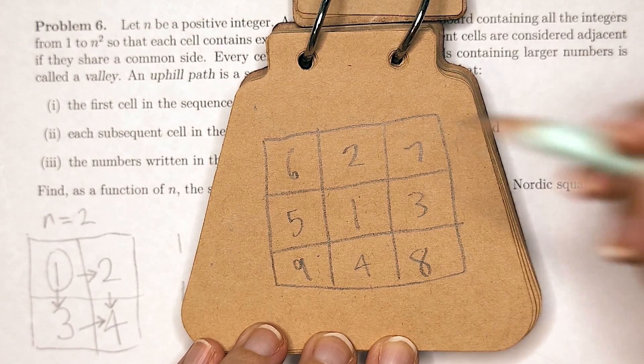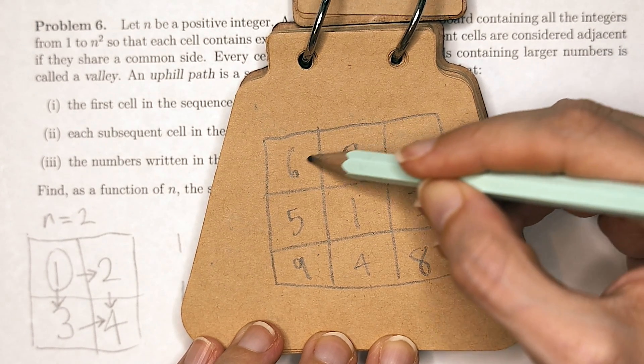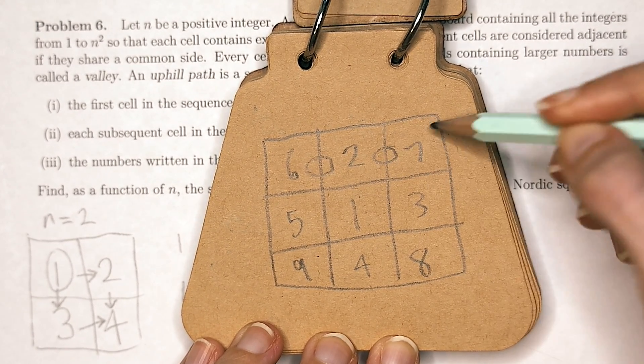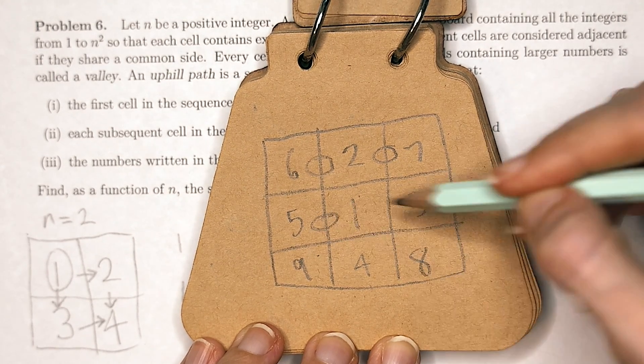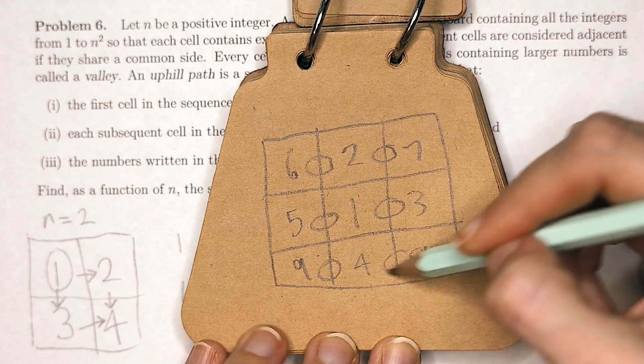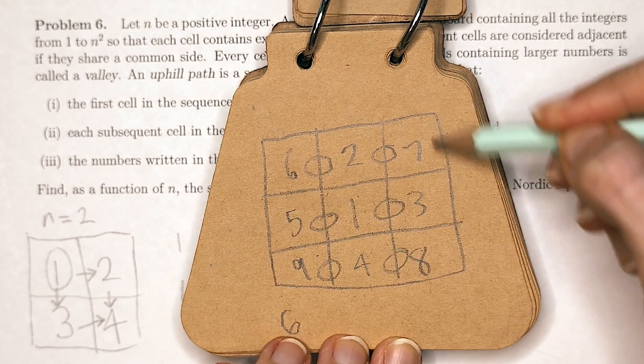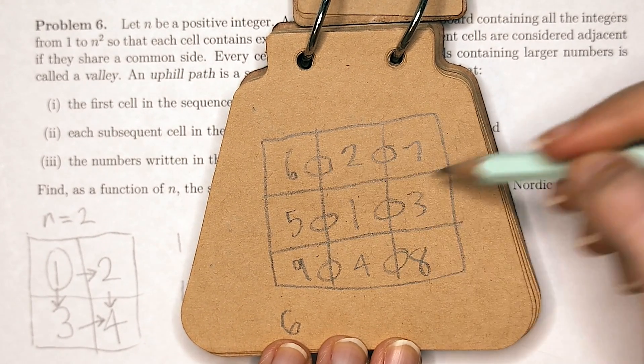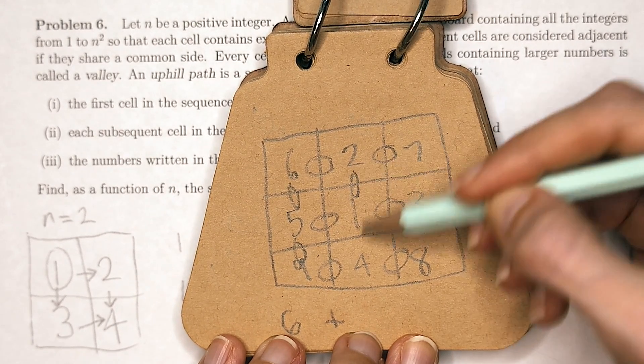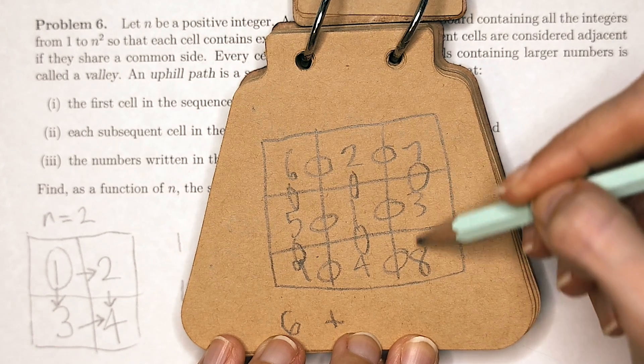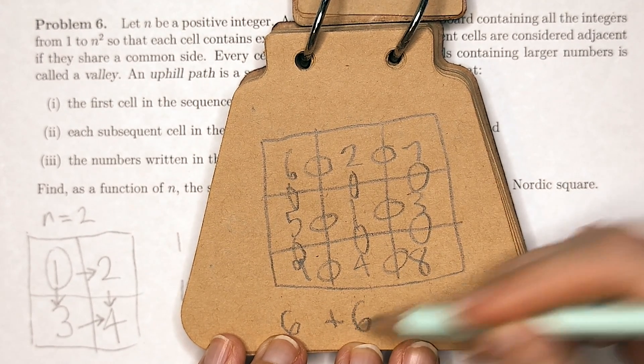Counting the pairs of adjacent numbers here, we have one, two in each row, and there's three rows, so that would be two times three, that's six adjacent numbers that are adjacent horizontally.